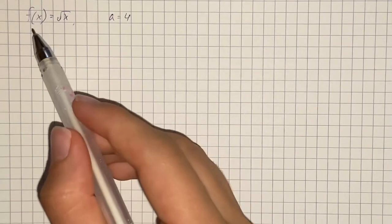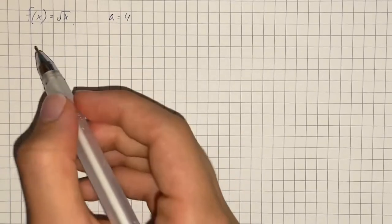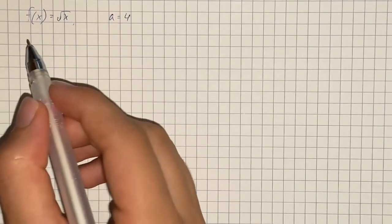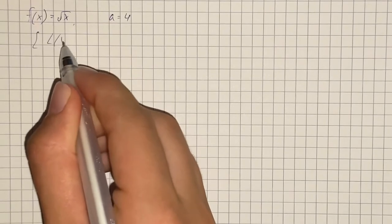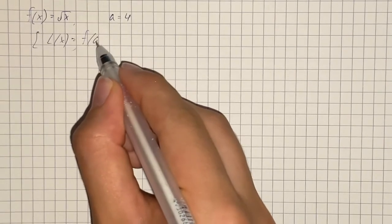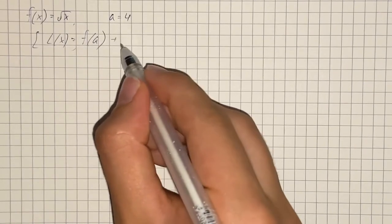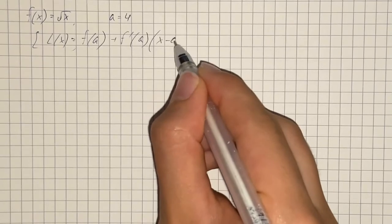We have to find the linearization of the given function at point A. So the linearization, the formula for linearization is L(x) equals function evaluated at point A plus derivative evaluated at point A times x minus A.